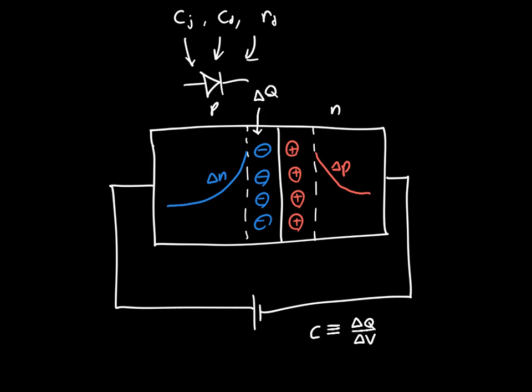the delta Q from the depletion region, plus delta Q from the diffusion electrons, and the same goes on the P-side.